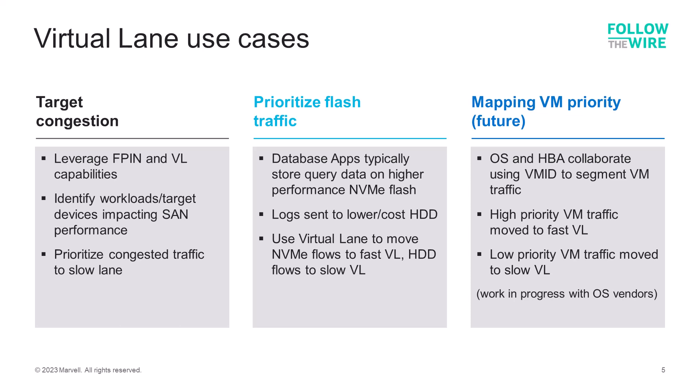In the future, the OS will get into the mix. Using VM-ID, the system administrator can set a priority at the VM level that can then be passed to the HBA, and the HBA can route the data flow from the VM to the appropriate virtual lane. This is still a work in progress with key OS vendors like VMware, but it's something that will be coming in the future.